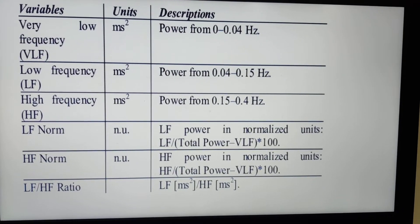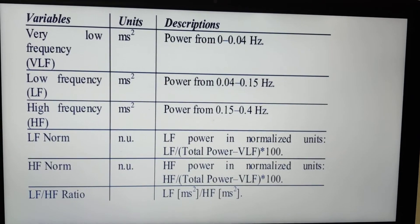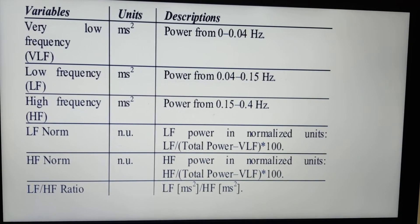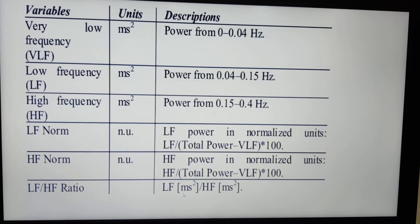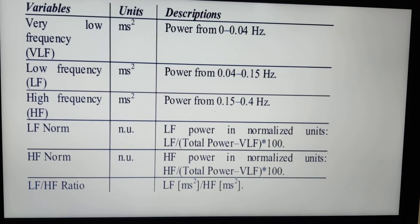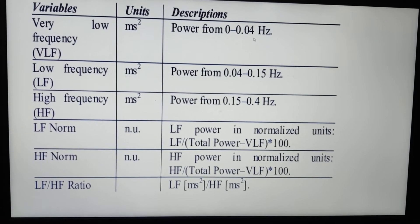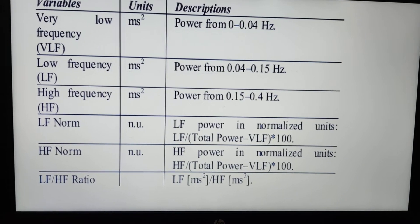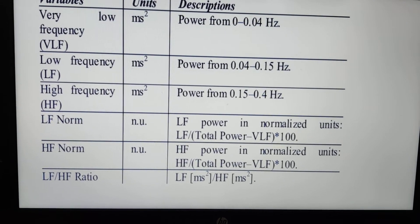The frequency domain, which we call the power spectrum, includes variables such as VLF, LF, HF, LF norm, and the LF/HF ratio, which is very important for interpretation of results. LF and HF are measured in milliseconds squared and signify sympathetic and parasympathetic activity respectively. The very low frequency component ranges from 0 to 0.04 Hz, low frequency from 0.04 to 0.15 Hz, and high frequency from 0.15 to 0.4 Hz. This is the formula for LF norm.